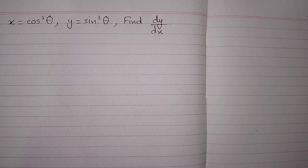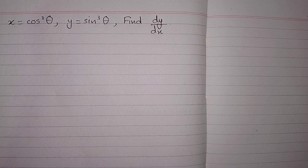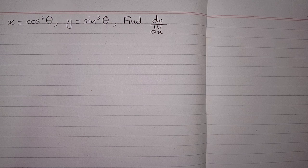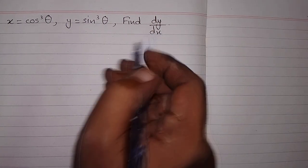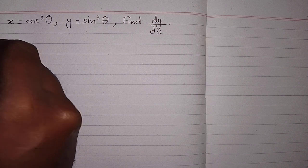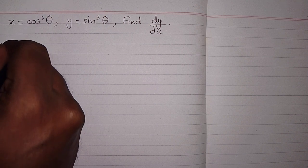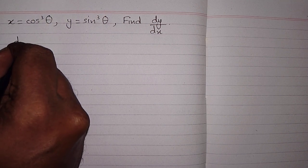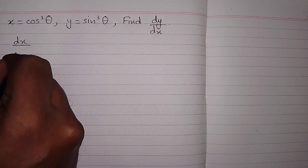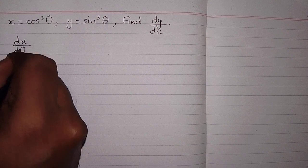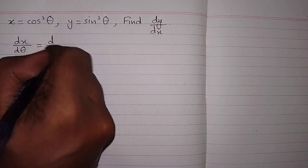In this video we will find the derivative of the function defined parametrically. The parametric equation is defined by x is equal to cos cube theta and y is equal to sine cube theta, and we have to find dy by dx. First we will find the derivative of x with respect to theta.